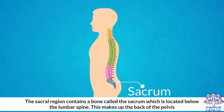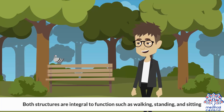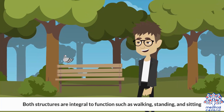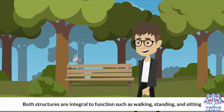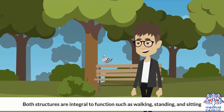The sacral region contains a bone called the sacrum, which is located below the lumbar spine. This makes up the back of the pelvis. Below the sacrum is the coccyx, commonly known as the tailbone. Both structures are integral to function, such as walking, standing, and sitting.